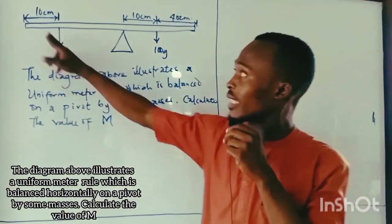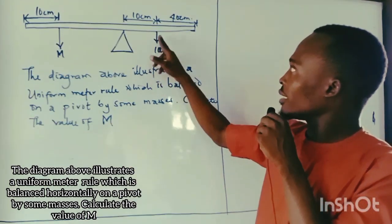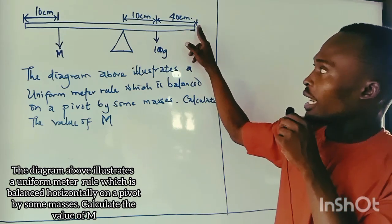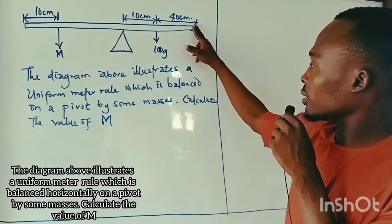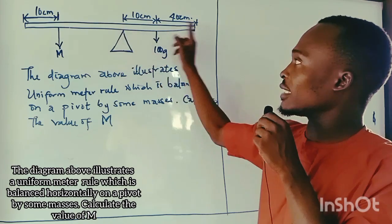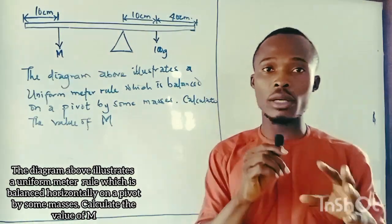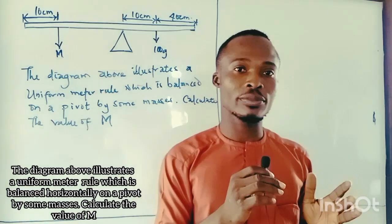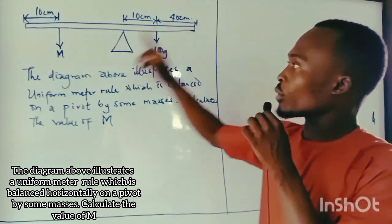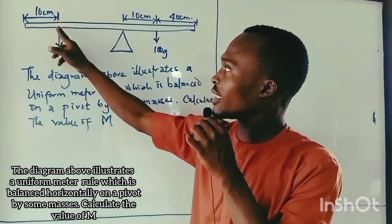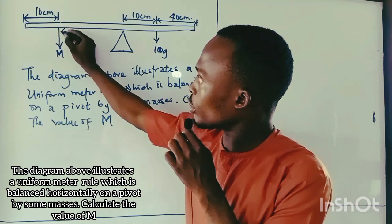This object M is placed at 10 cm from one end, giving a distance of 10 cm to the pivot. From this point to this point happens to be 50 cm. Since it is a uniform meter rule, that means the meter rule is 100 cm — that is 1 meter. So the total length from end to end is 100 cm, and the object M is placed at 10 cm from that end.